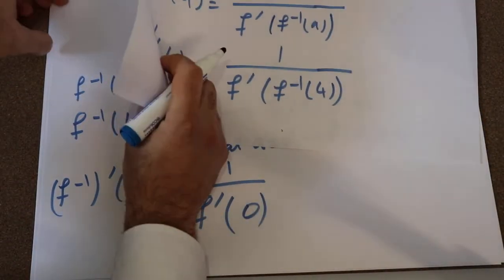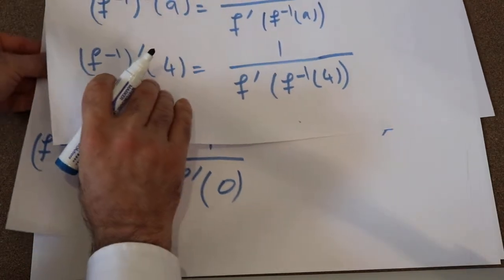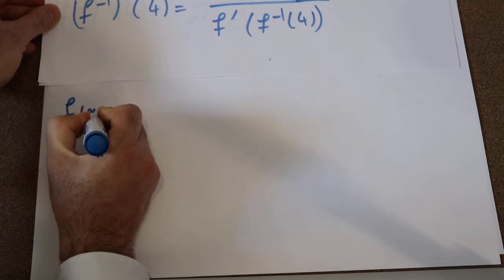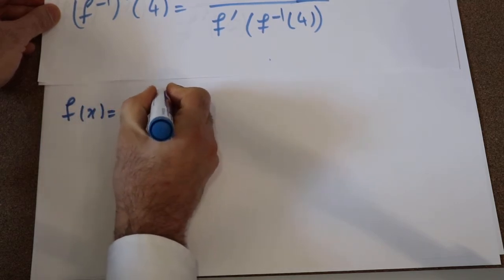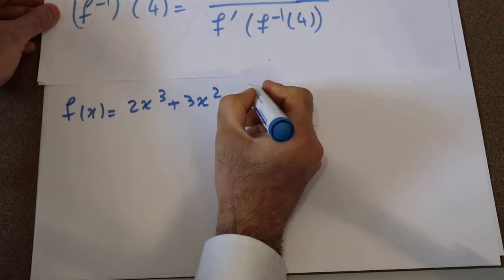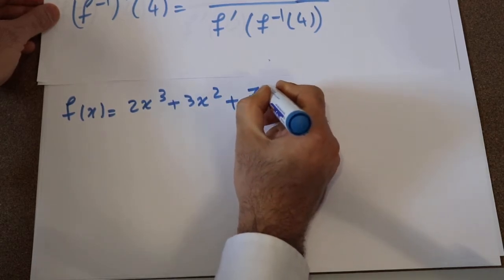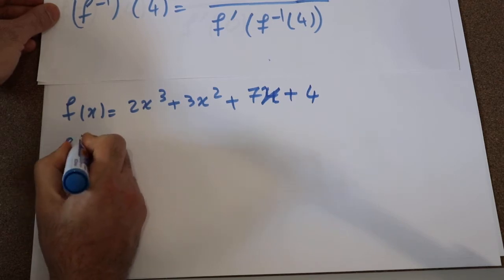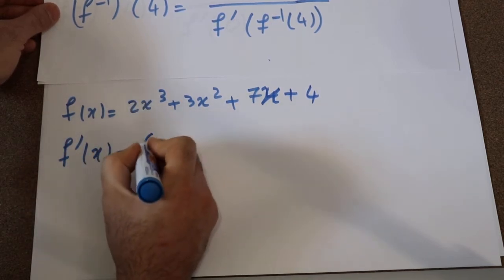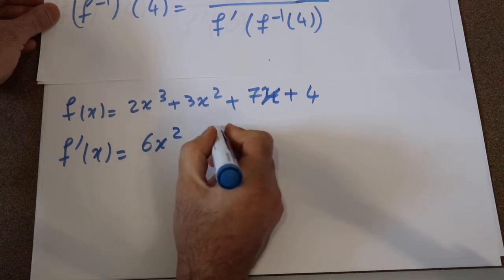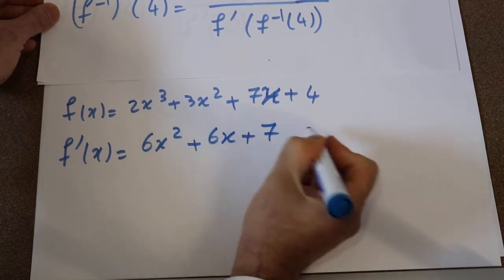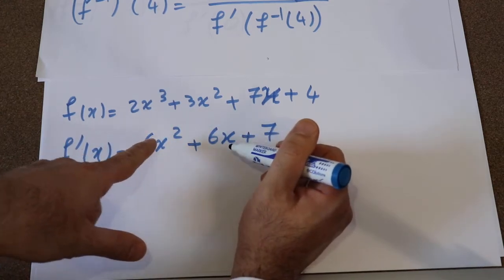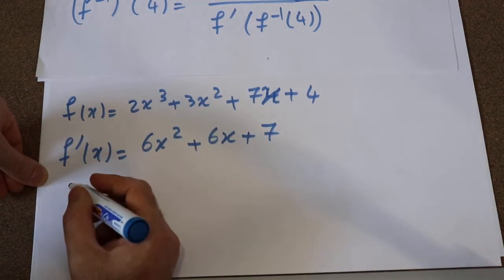Let me write the original function once again here. f(x) was equal to 2x³ plus 3x² plus 7x plus 4. So the derivative of f will be equal to 6x² plus 6x plus 7. If it's not clear for you how to calculate this derivative, write in the comment section and I will explain how it works.